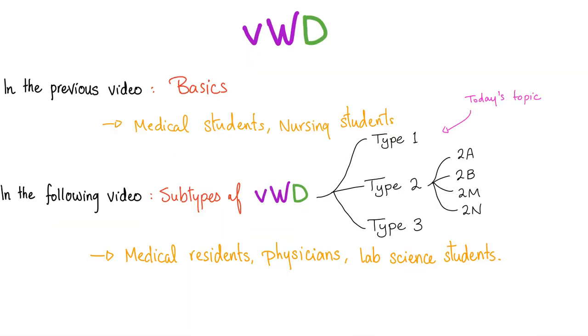In the previous video, we talked about the basics of von Willebrand disease, or what people would call type 1 von Willebrand disease, which is the most common subtype. In the upcoming video, we'll talk about the different subtypes of von Willebrand disease.